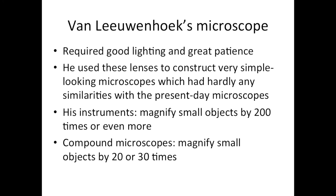He used the lens to inspect cloth fibres. He also used these lenses to construct many very simple looking microscopes, which had hardly any similarities with present day microscopes. But his instruments were powerful enough to magnify small objects by 200 times or even more, whilst compound microscopes, even though being much more similar in design to modern microscopes, only had a magnification of 20 or 30 times. His microscopes consisted of a single biconvex lens fitted between two metal plates.